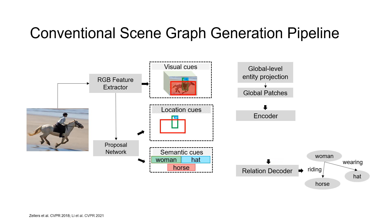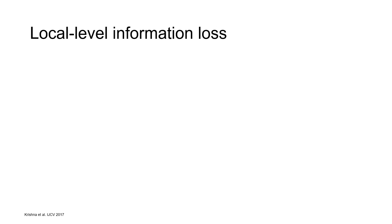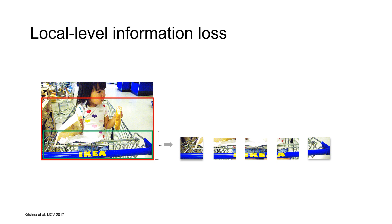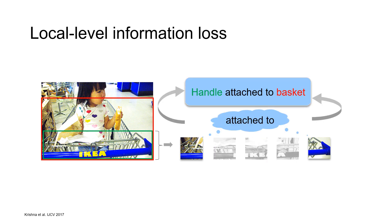A drawback of conventional SGG is its parameter-heavy global entity projection, which results in local-level information loss. For example, establishing the attached relation between the handle and the basket relies more on the corner tile details of the handle than the center tiles. Global projection may risk losing these crucial features.